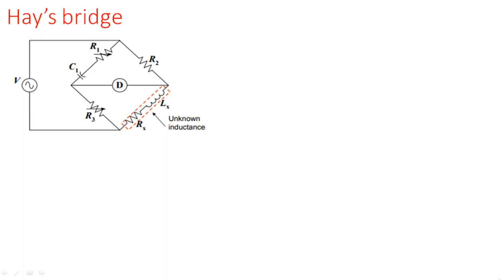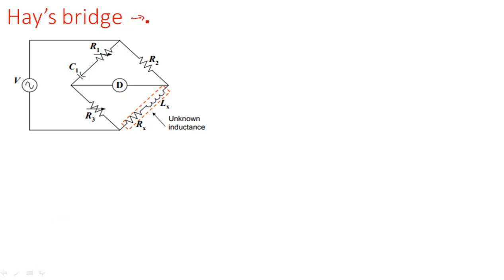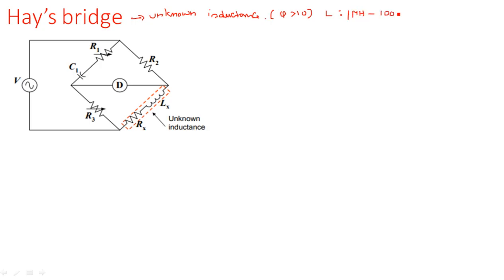In this video I am going to explain the Hay's Bridge. The Hay's Bridge is also used to measure the unknown inductance, like Maxwell's Bridge. The limitation of Maxwell's Bridge is that it can only measure quality factors less than 10, but the Hay's Bridge has a quality factor greater than 10. It can measure inductance values from 1 micro Henry to 100 Henries with plus or minus 2 percent error.